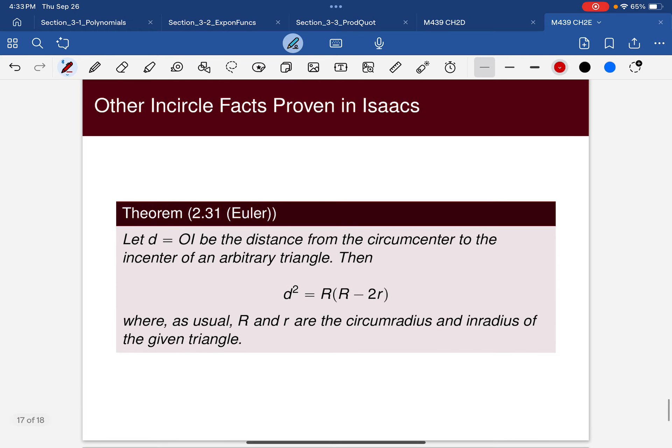And then one thing I just couldn't help but put in here was this theorem by Euler. And he says that if distance, if d is equal to OI, the distance from the circumcenter to the incenter of an arbitrary triangle, then that distance squared is equal to R times the quantity R minus 2r where R, big R and little r, the circumradius and the inradius of the given triangle.